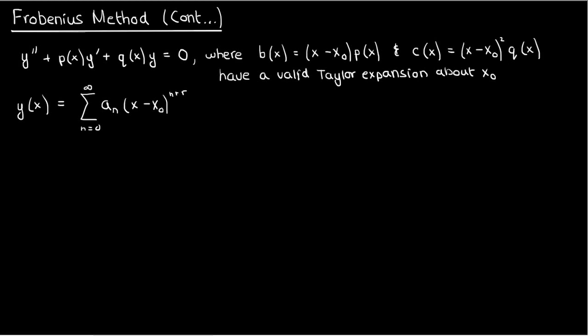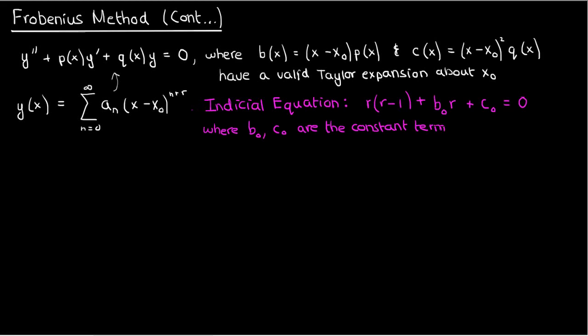If we're solving this differential equation by Frobenius's method, we end up with what's called an indicial equation during our solution process. The indicial equation is given by r(r-1) + b₀r + c₀ = 0, where b₀ and c₀ are the constant terms in the Taylor expansions of b and c respectively.